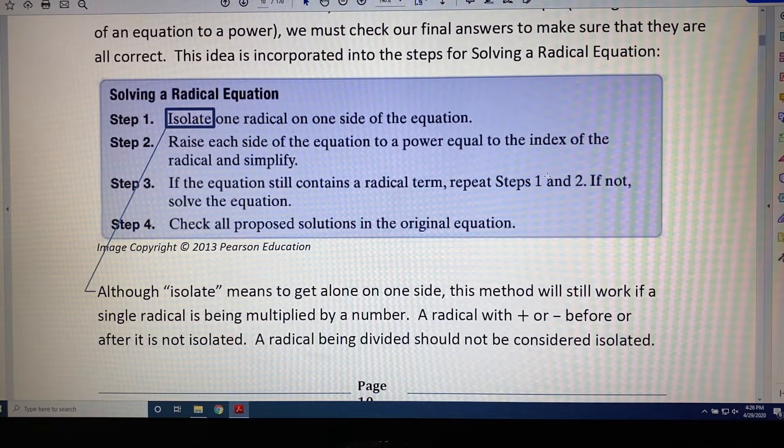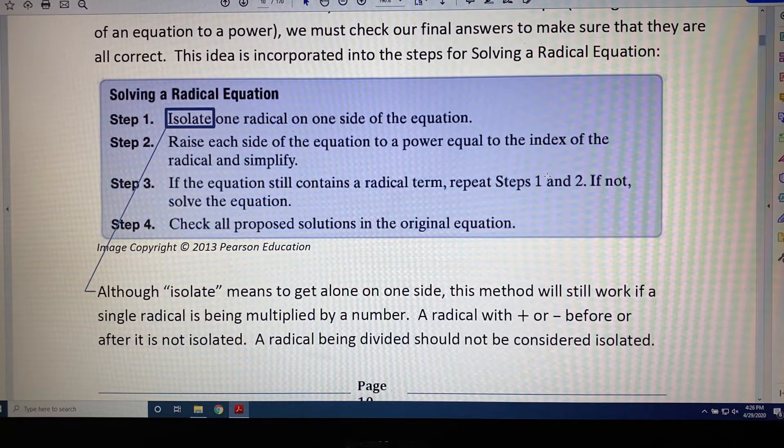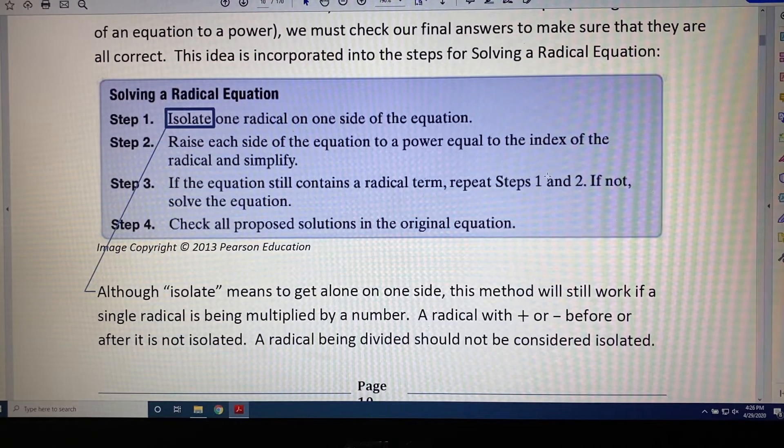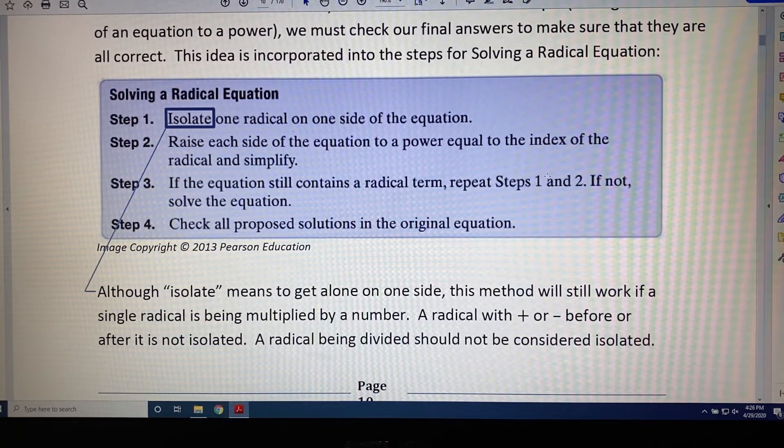Steps for solving a radical equation. Step 1: Isolate one radical on one side of the equation. Step 2: Raise each side of the equation to a power equal to the index of the isolated radical and simplify.